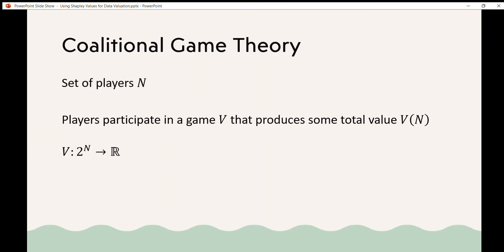To look at Shapley values for data evaluation, first we have to look at coalitional game theory where Shapley values were initially introduced. So in coalitional game theory, you have a set of players n, and these players participate in a game v that produces some total value, v of n.